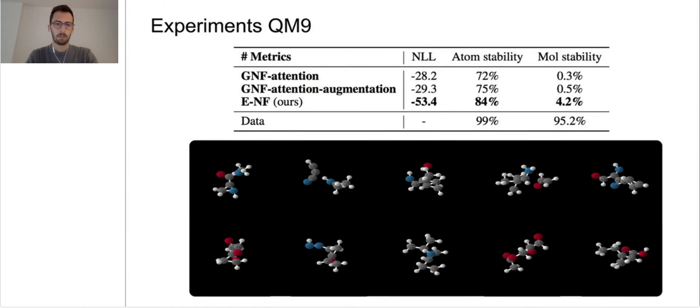Finally, we analyze the performance of our equivariant flow when generating molecules directly in its 3D space. We consider an atom is stable when the number of bonds with other atoms matches their valence. We consider a molecule stable when all its atoms are stable. Notice the stability measure is very sensitive to small variations. This is because a very small shift in an atom position can make the whole molecule unstable. As we see, our equivariant normalizing flow performs better than its non-equivariant variants in terms of negative log-likelihood and atom and molecule stability.